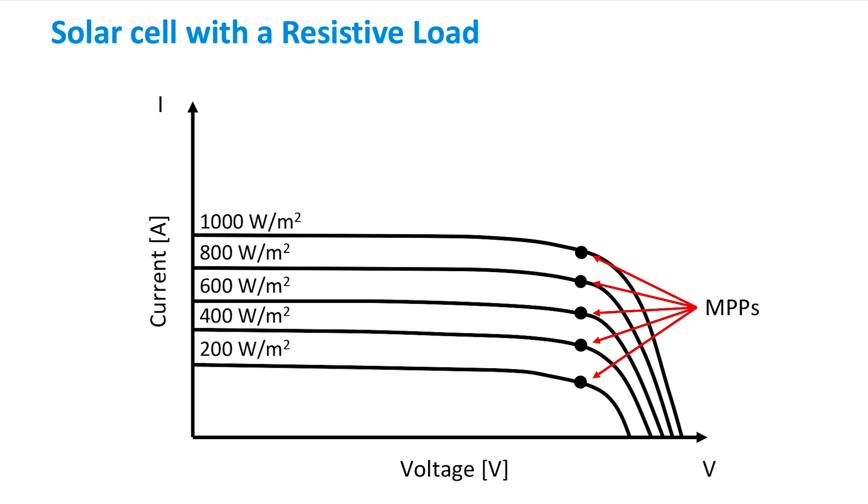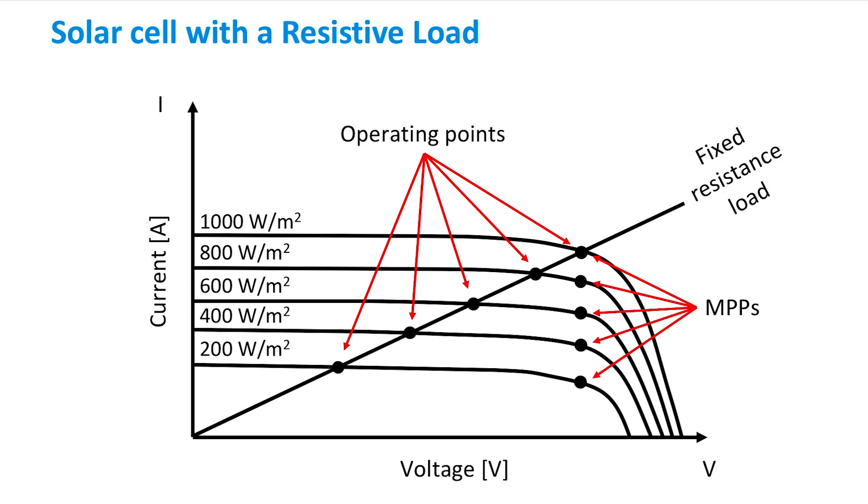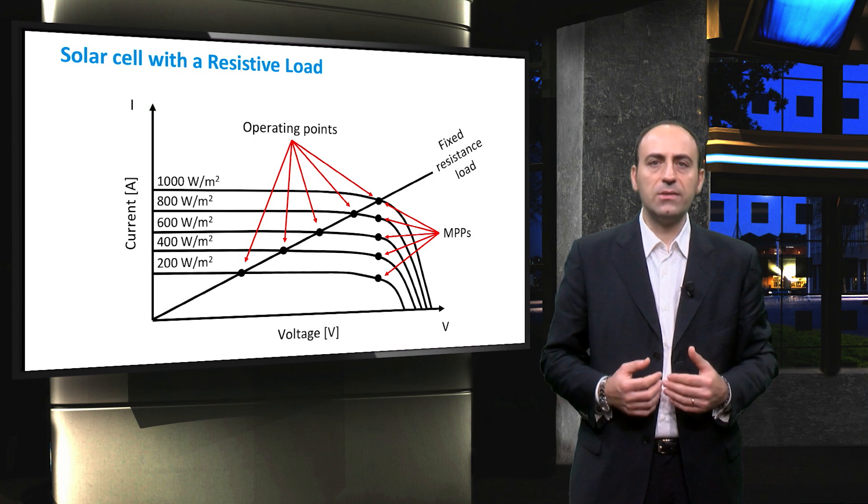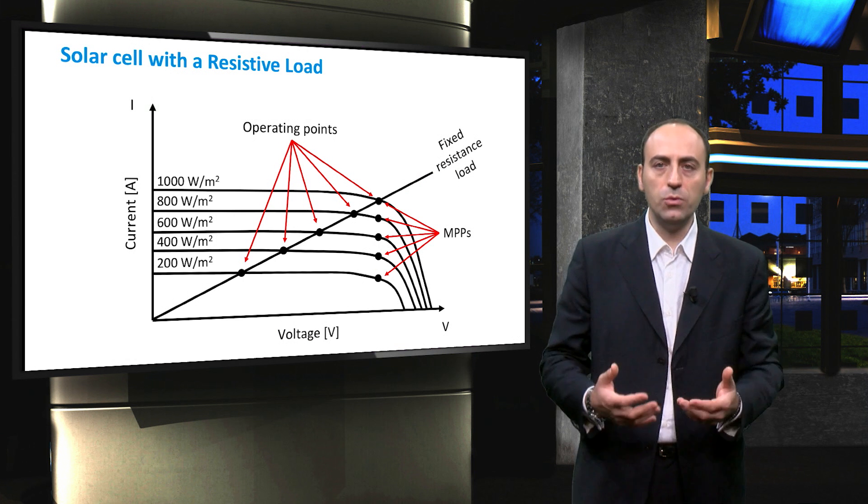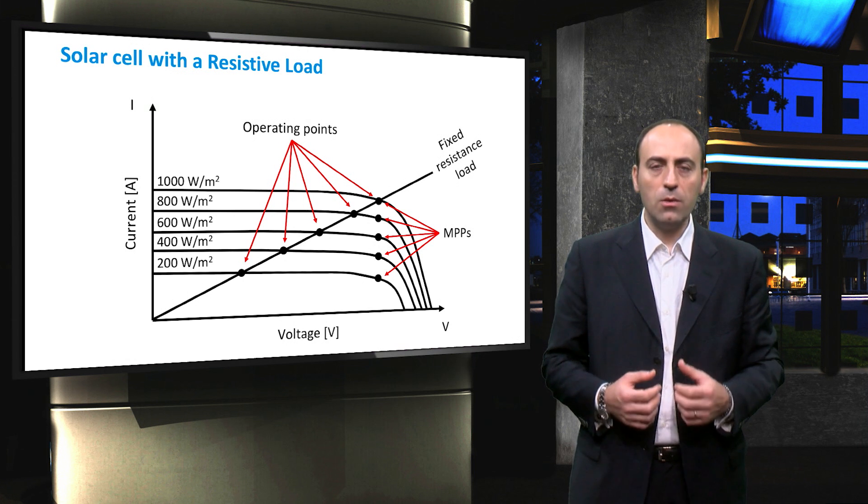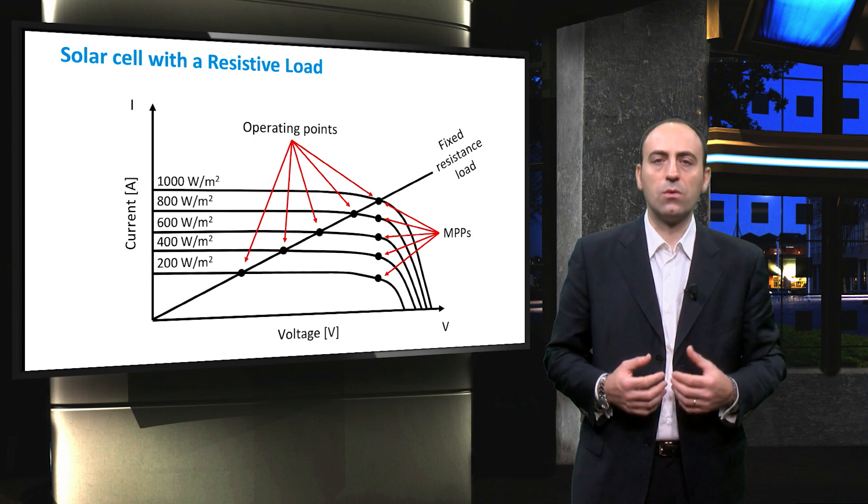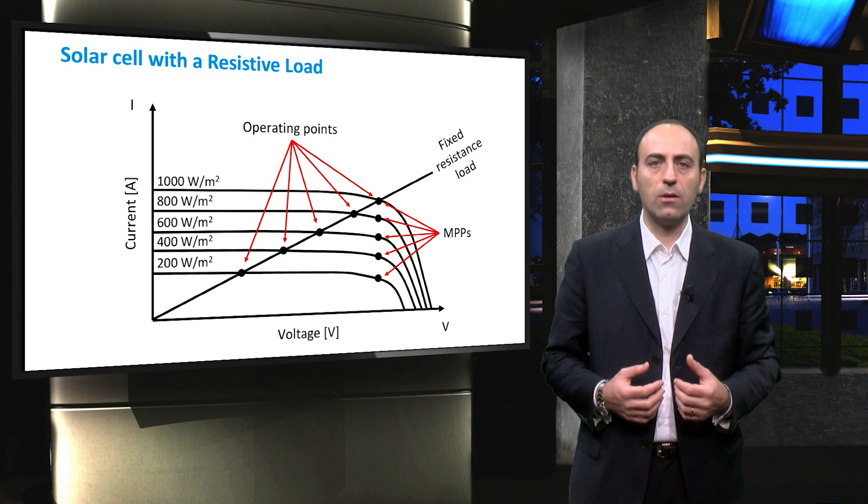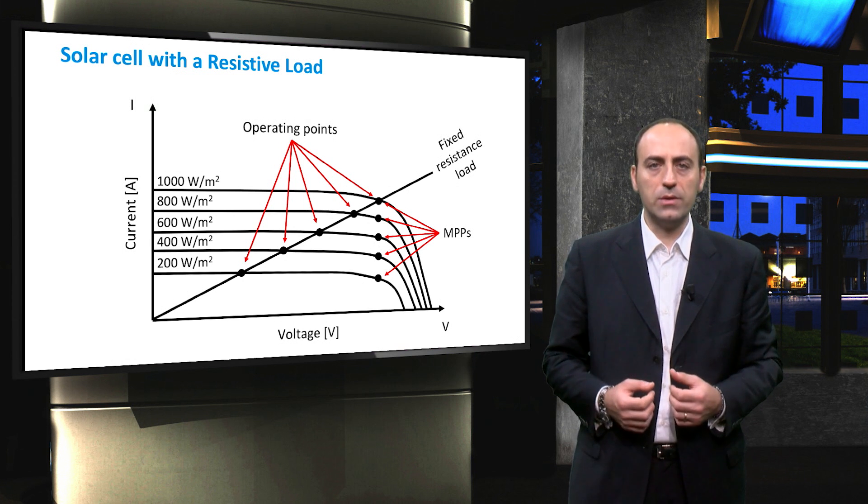However, if the load is a simple resistor as the one depicted in figure with the straight line, then we can see that under different irradiance conditions, the operating point may or may not overlap with the best output of the module. In this case, the solar module can only contribute a portion of the actually available power. In other words, depending on which resistance or load is attached to the PV panel, we have different operating points.